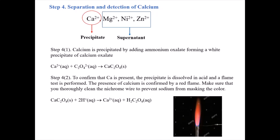In part 2 of experiment 12, we focus on the detection and separation of calcium, magnesium, nickel, and zinc. We start with the supernatant from step 3A, which contained these four ions after iron, chromium, and aluminum were removed. Calcium is precipitated by adding ammonium oxalate—calcium oxalate is insoluble and forms a white solid precipitate. If calcium is present, we get a white precipitate of calcium oxalate.